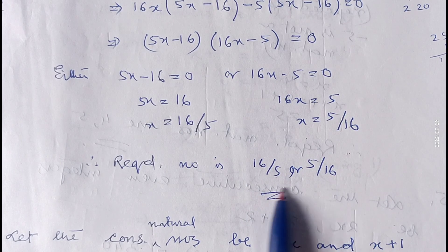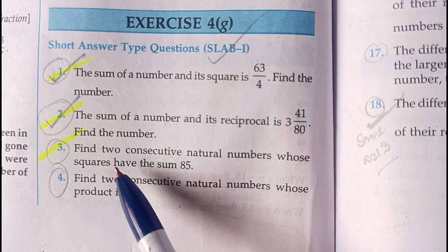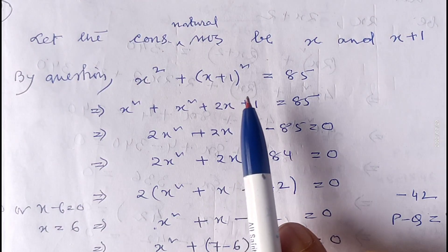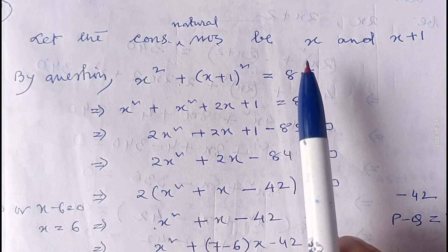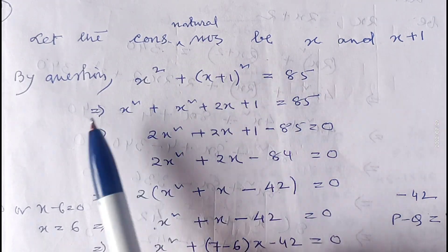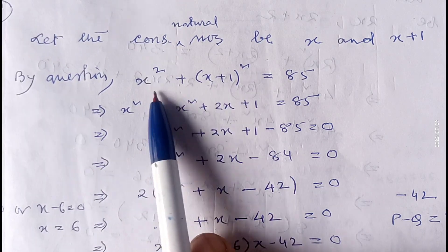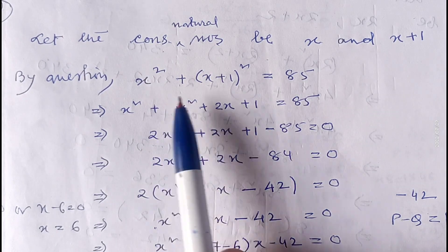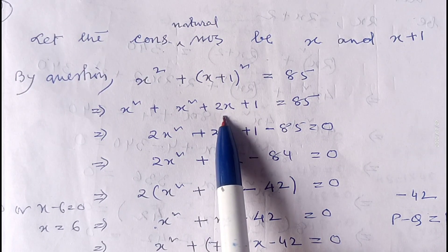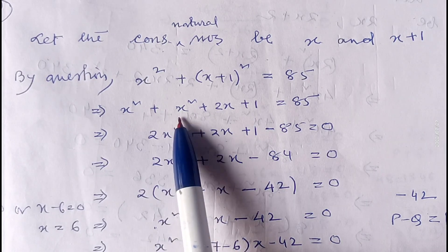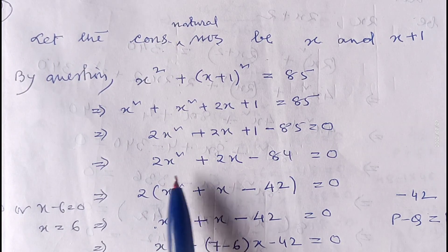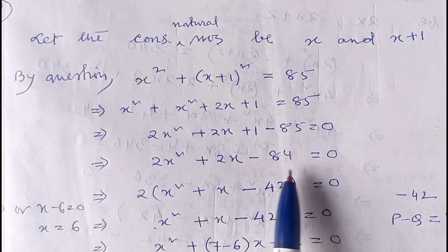Question number 3: find two consecutive natural numbers whose squares have the sum 85. As given, they are consecutive natural numbers, so let one number be x and the other be x plus 1. Sum of their squares: x square plus (x plus 1) whole square equals 85. Expanding using (a plus b) whole square: x square plus x square plus 2x plus 1 equals 85, giving 2x square plus 2x plus 1 minus 85 equals zero.